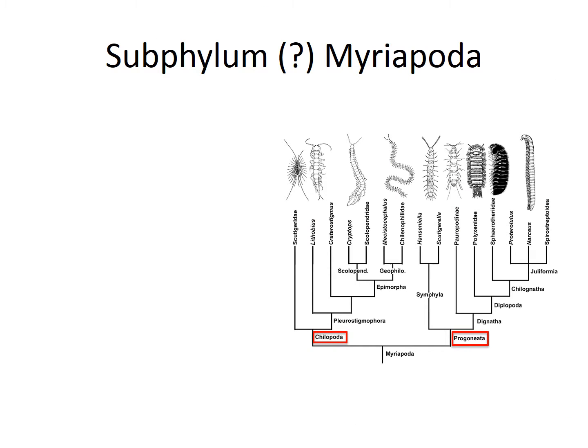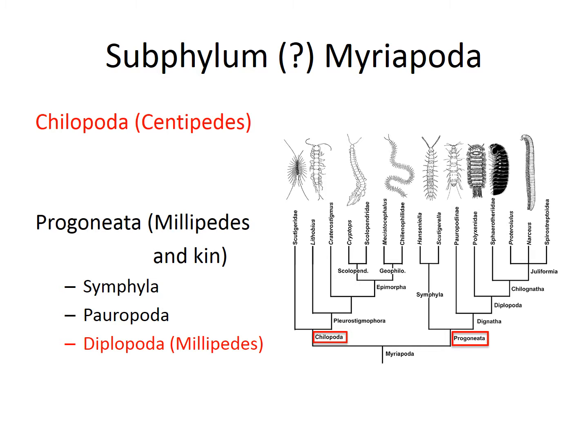So the subphylum, or tentatively subphylum, Myriapoda contains two main groups. The first is Chilopoda, or the centipedes. The second is Progonida — millipedes and their kin — which includes a couple of groups: the symphylans, which are weird little things; the pauropods, which are weird little soil-dwelling things; and the diplopods, or millipedes. We'll focus on the two highlighted in red. And I'll make the statement again that this phylogeny really is a giant mess, so take it all with a grain of salt.